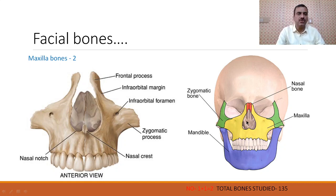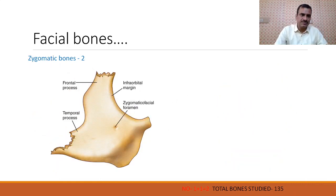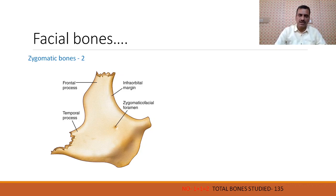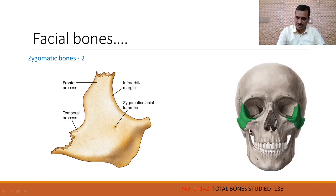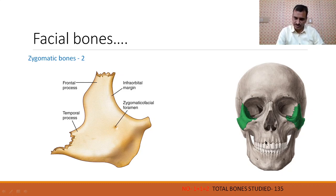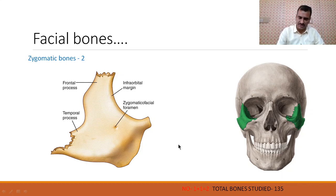Now we come to another bone, that is the zygomatic bone. This is another irregular bone also known as the cheek bone because it is situated in the cheeks — one here and one here. Two zygomatic bones are there forming the cheeks, one left and one right. Total bones studied up to this level are 135.